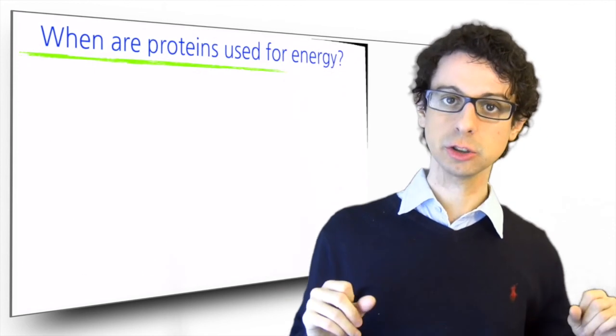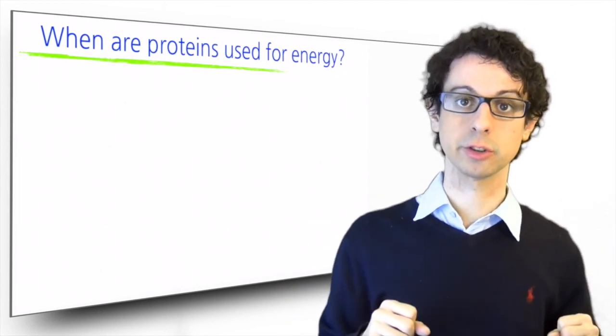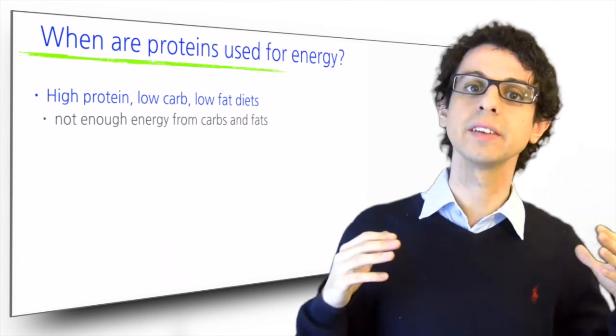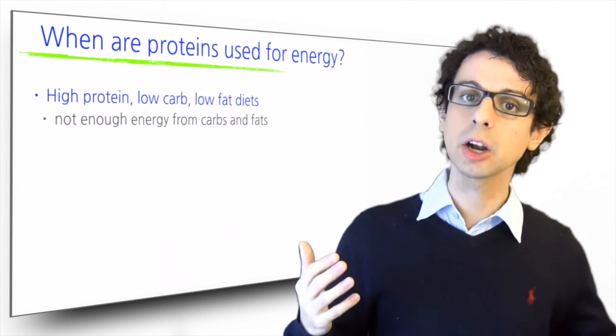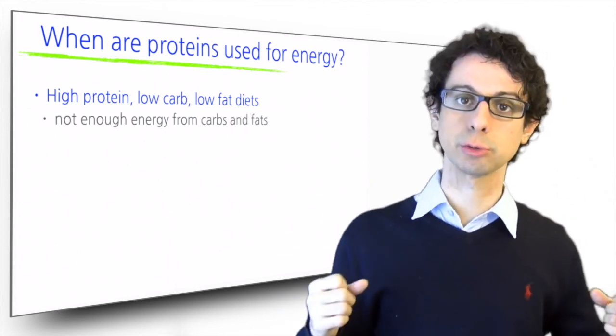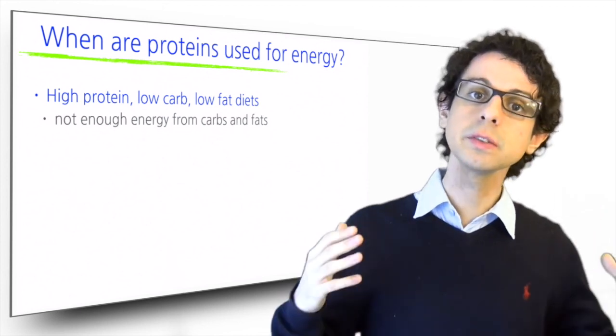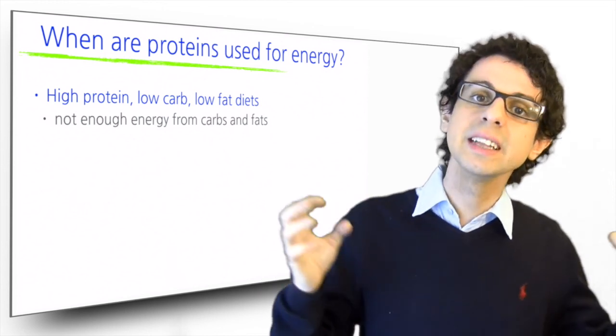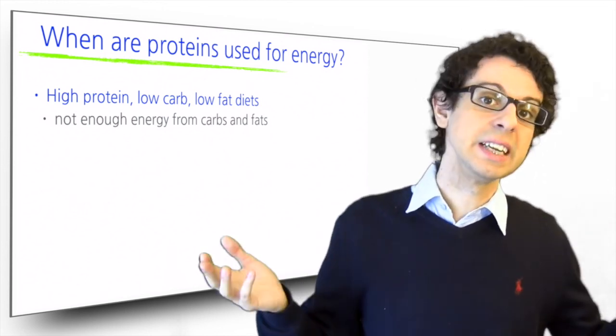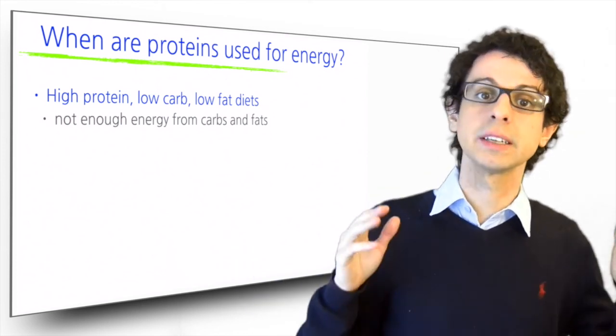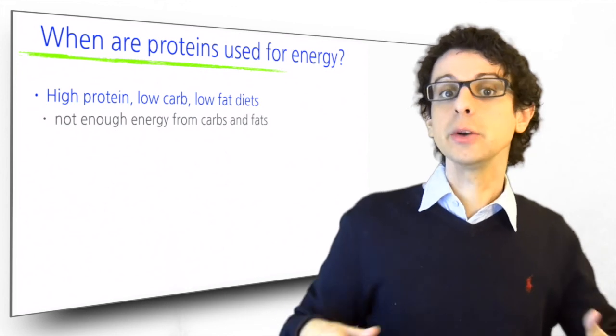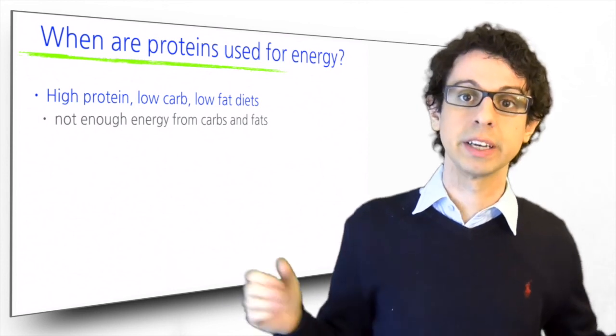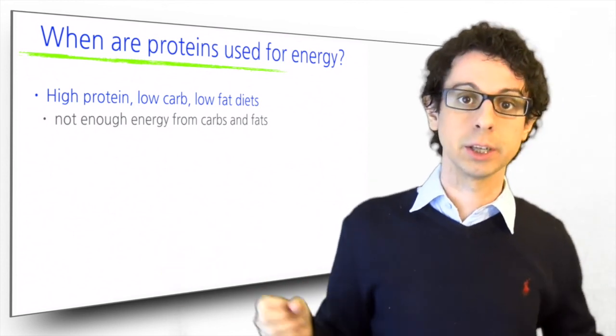There are mainly three situations where we will end up using protein for energy production. One is high protein, low fat and low carb diets. In this situation, you don't have enough carbs and fats for energy, but you have a lot of extra proteins beyond what you need for structural and regulatory purposes. So you'll just use those proteins for energy. This is not the worst case scenario, because you're not stealing proteins from your lean mass. You're just eating extra. It's just a waste of proteins, but it's not harmful. If you're very rich, you can decide that in your fireplace, you only want to burn ancient Chinese wooden artifacts instead of plain wood. You're not harming anybody, it's just probably not smart.